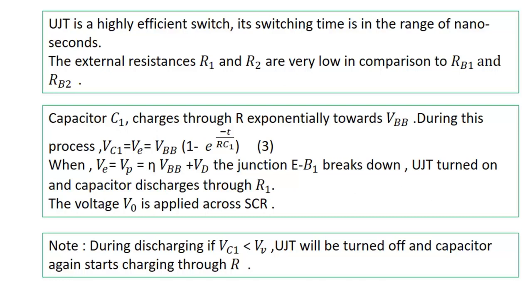The voltage developed across resistance R1 will serve as the triggering pulse of the SCR. The external resistances R1, R2 are very low in comparison to RB1 and R. Capacitor C1 charges through R exponentially towards VBB. Because before VBB, a peak point will be there and at that point capacitor will discharge through R1.